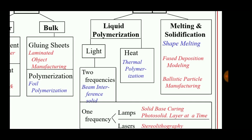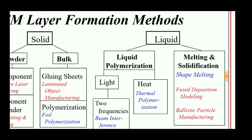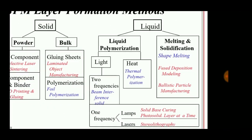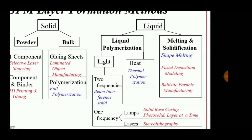For liquid methods, liquid polymerization and melt solidification are used. In liquid polymerization, light is used as an energy source in two modes: two-frequency beam solidification using lamps and lasers, and solid-base curing with photopolymerization. Stereolithography is also included in this category.